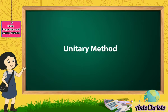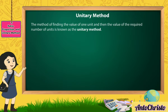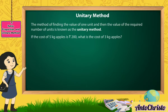Unitary Method: The method of finding the value of one unit and then the value of the required number of units is known as the unitary method. Let's consider the following situation: if the cost of 5 kg apples is Rs 200, what is the cost of 3 kg apples?